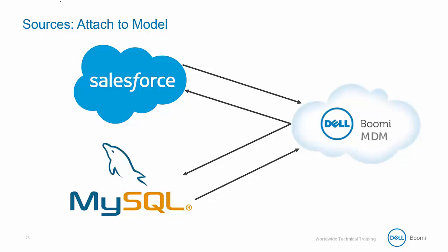When you attach a source to a model, you're essentially attaching them to a particular domain. They represent the systems contributing data to that domain or accepting updates from them. Most sources are configured to both contribute data and accept updates of data.